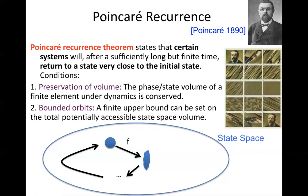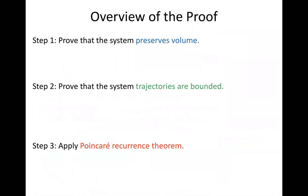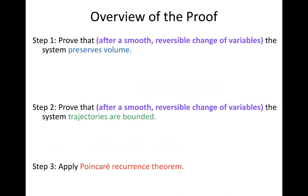Our three-step proof strategy is: step one, show our system preserves volume; step two, prove trajectories are bounded; then apply the Poincaré recurrence theorem. Critically, we do not argue about recurrence in the original space of product of simplices — we perform a smooth and reversible change of variables first, then apply these two steps in the transformed space.